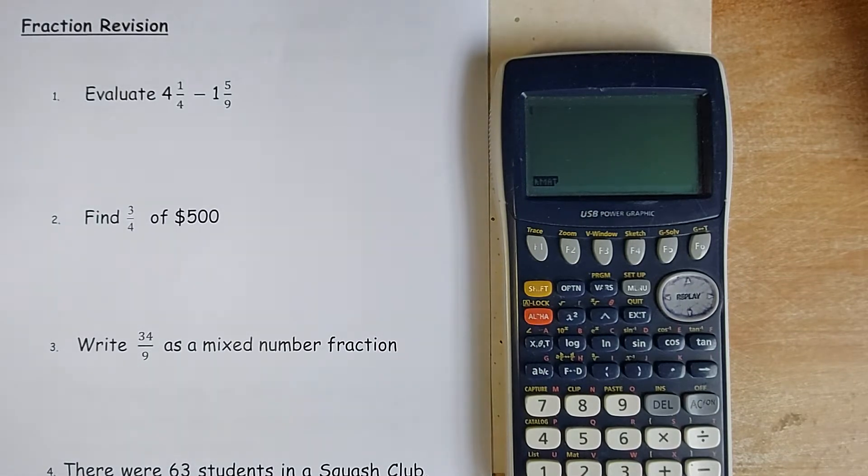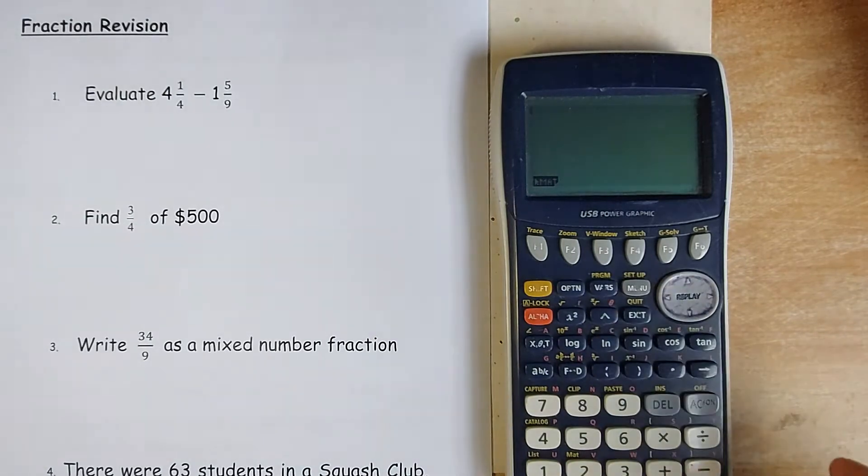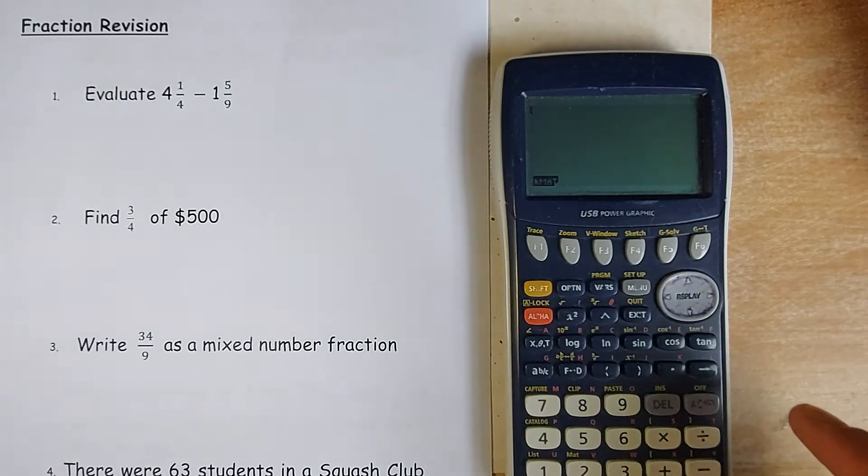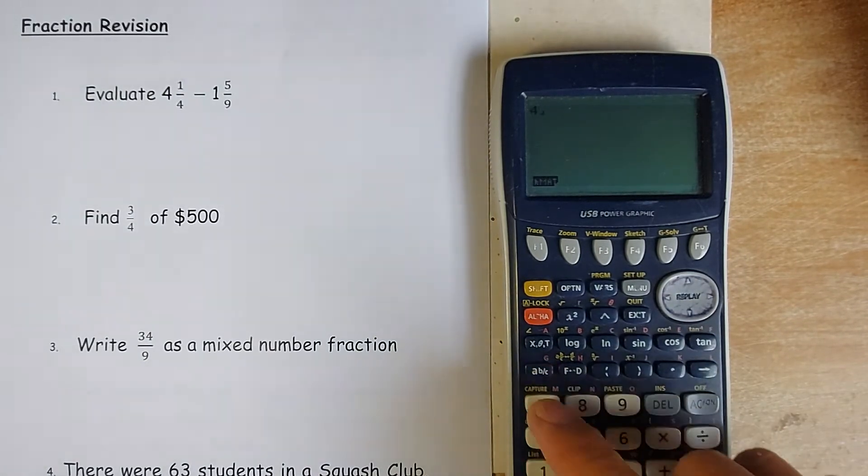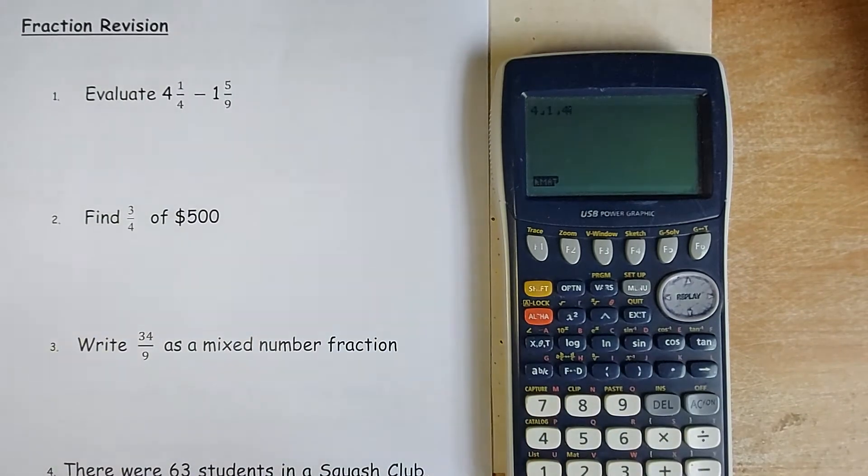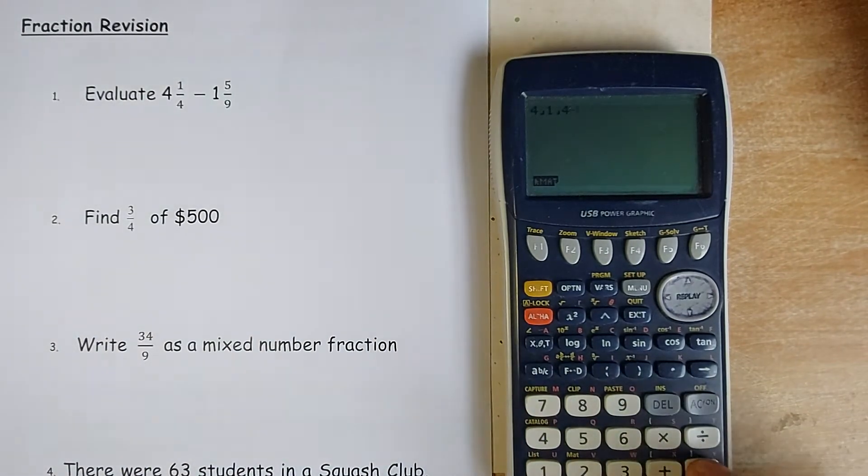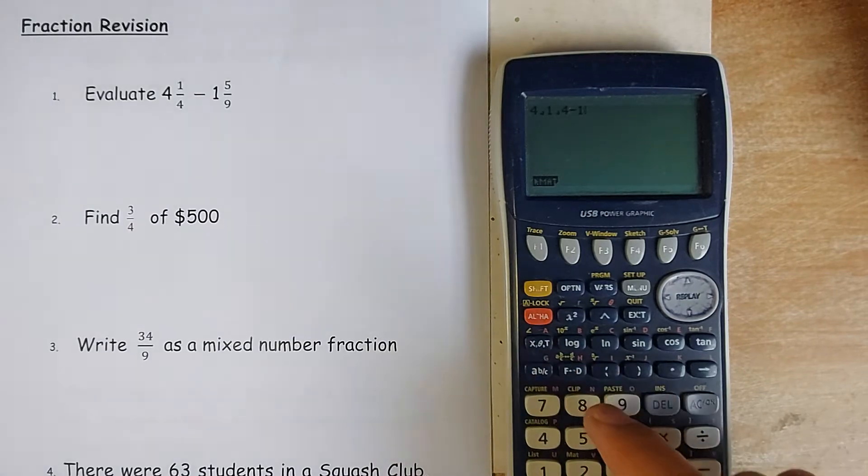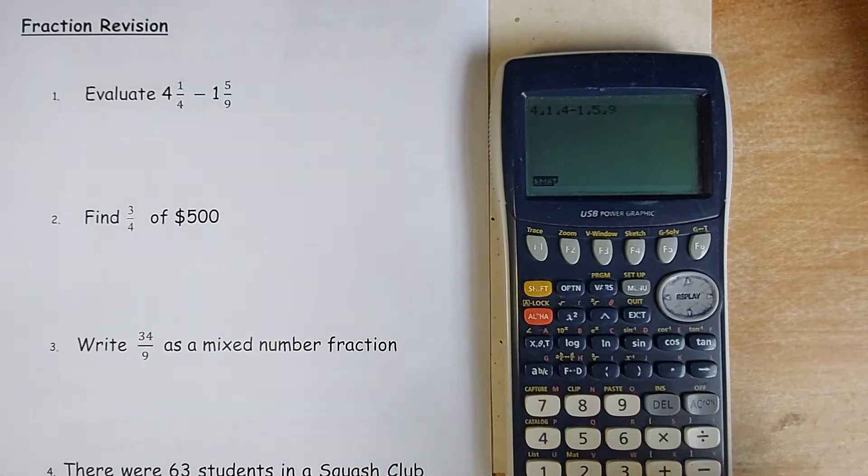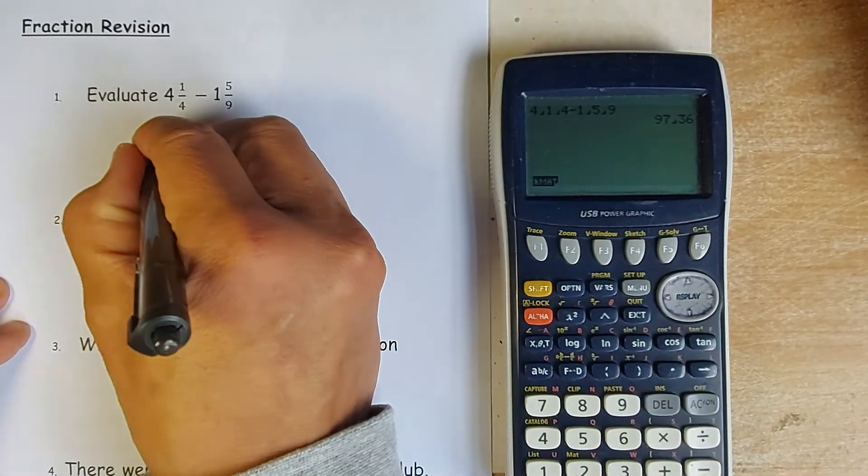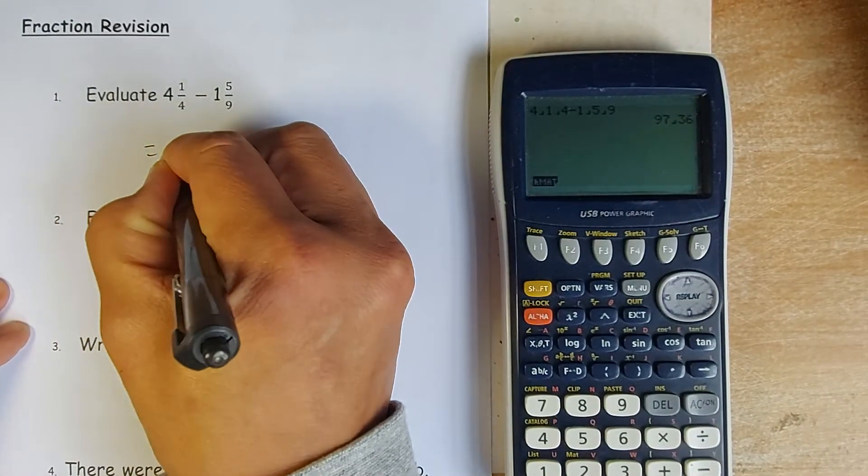The first question is evaluate 4¼ take away 1 and 5/9. The easiest way to do it is use the calculator. So we're going to have 4 and 1 quarter, written as 4 and 1 quarter, take away 1, 5/9. Put in your calculator and the answer is 97 over 36. Very simple, 97 over 36.